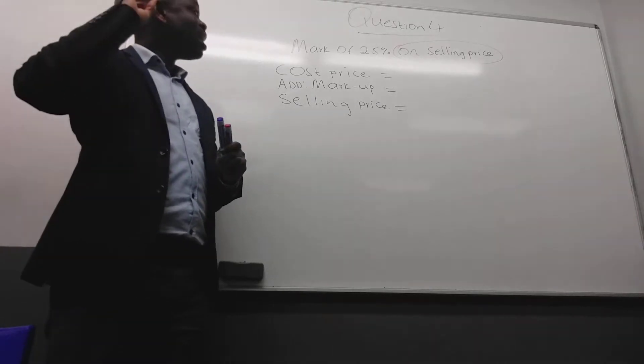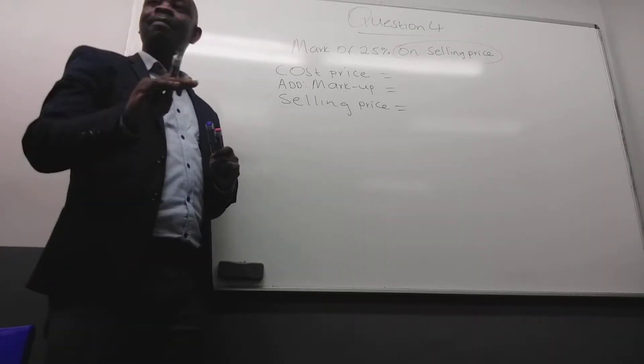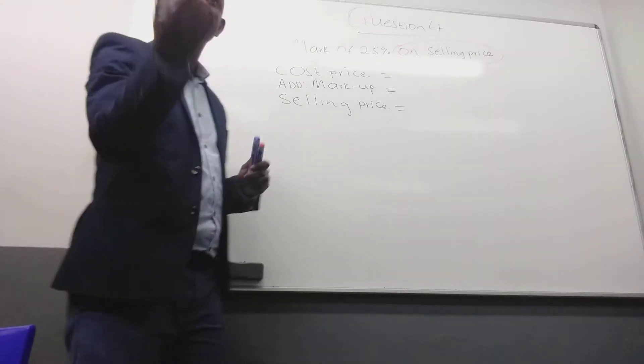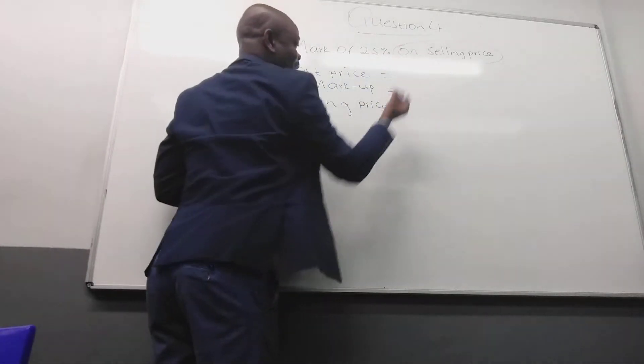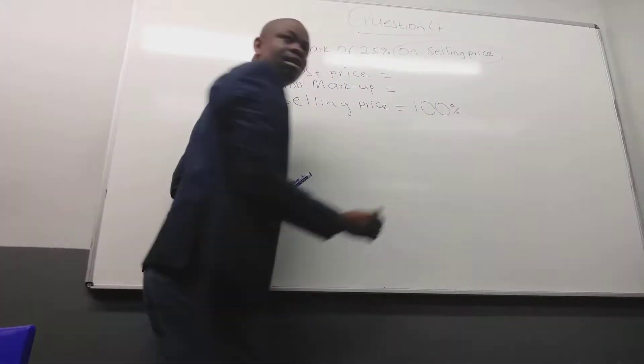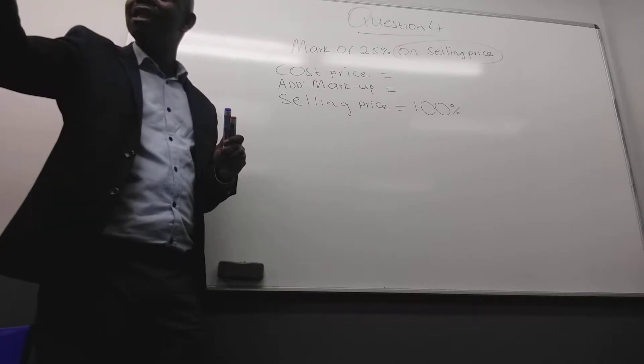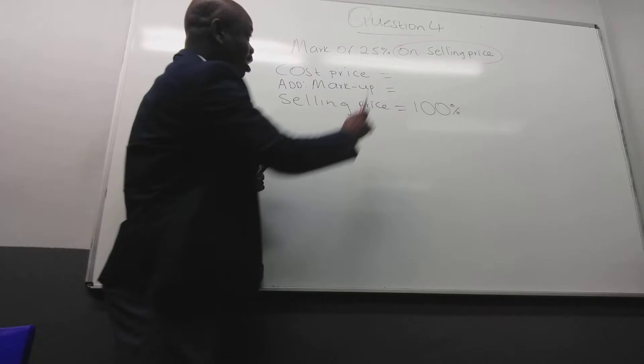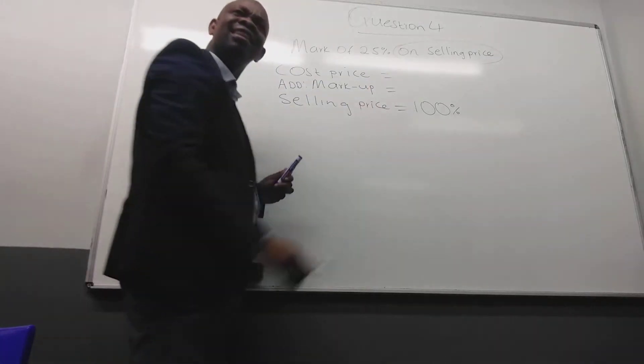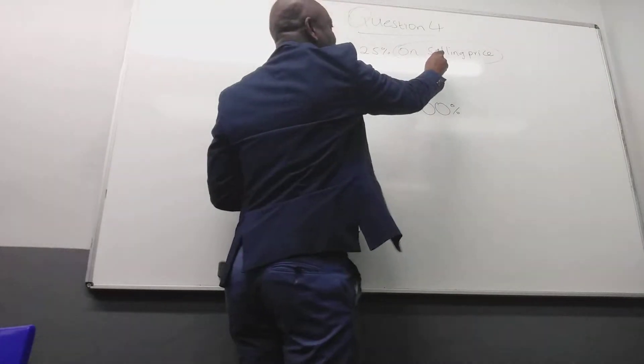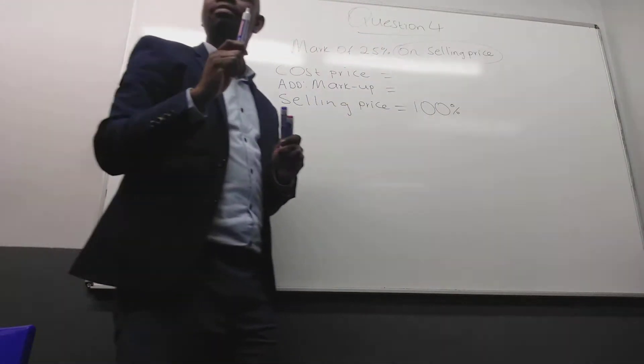Now remember, if the markup is on selling price, where must we put our 100%? On selling price. On selling price, meaning we put 100% here. Are we together? Next time, it can be next week, they can say on cost. Your 100% will be where? So you must read. This is important. This helps you where to put 100%.